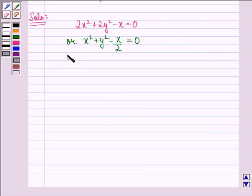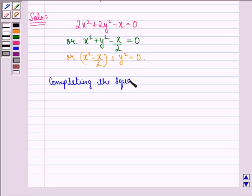We can also write it as x² - x/2 + y² = 0. Now, completing the squares within the parenthesis,